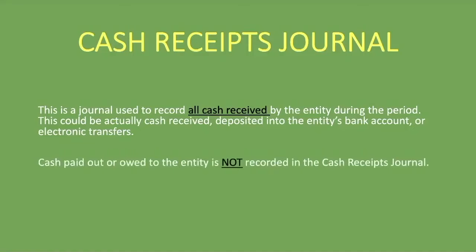That is where some students make mistakes. For example, if you sold something to someone and the person still owes you money, you would not record it in the cash receipts journal because you have not received the money yet. Also, if you are paying cash out, that is recorded in the cash payments journal, not the cash receipts journal.